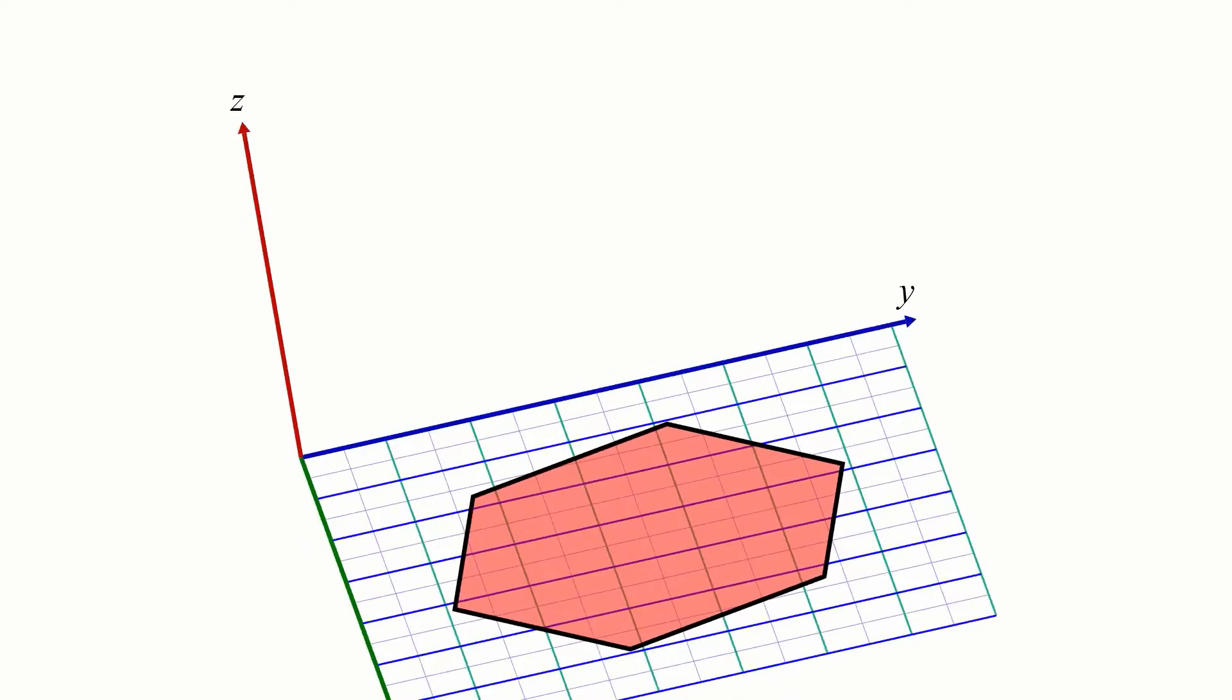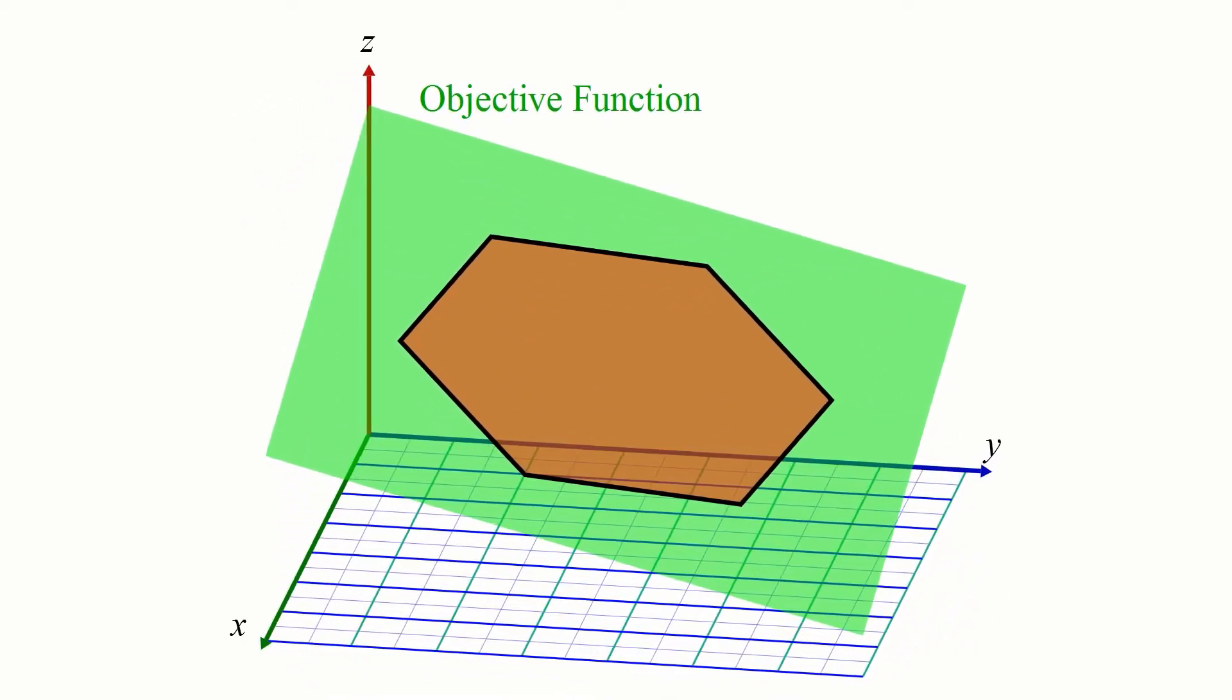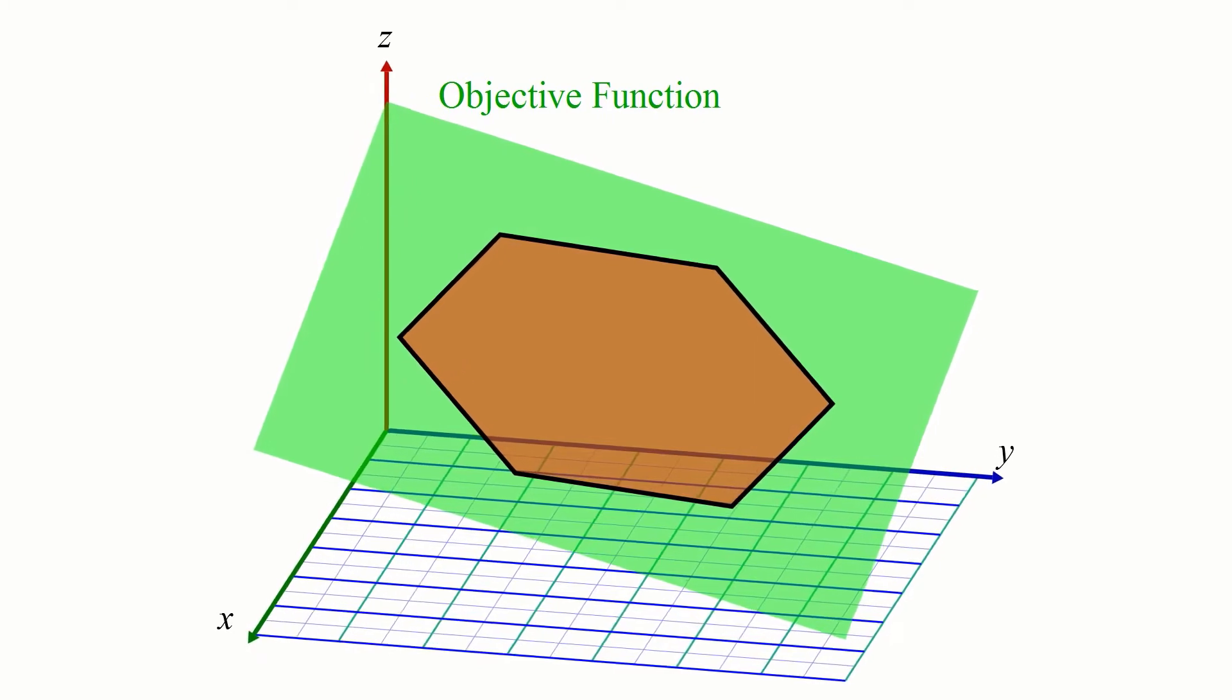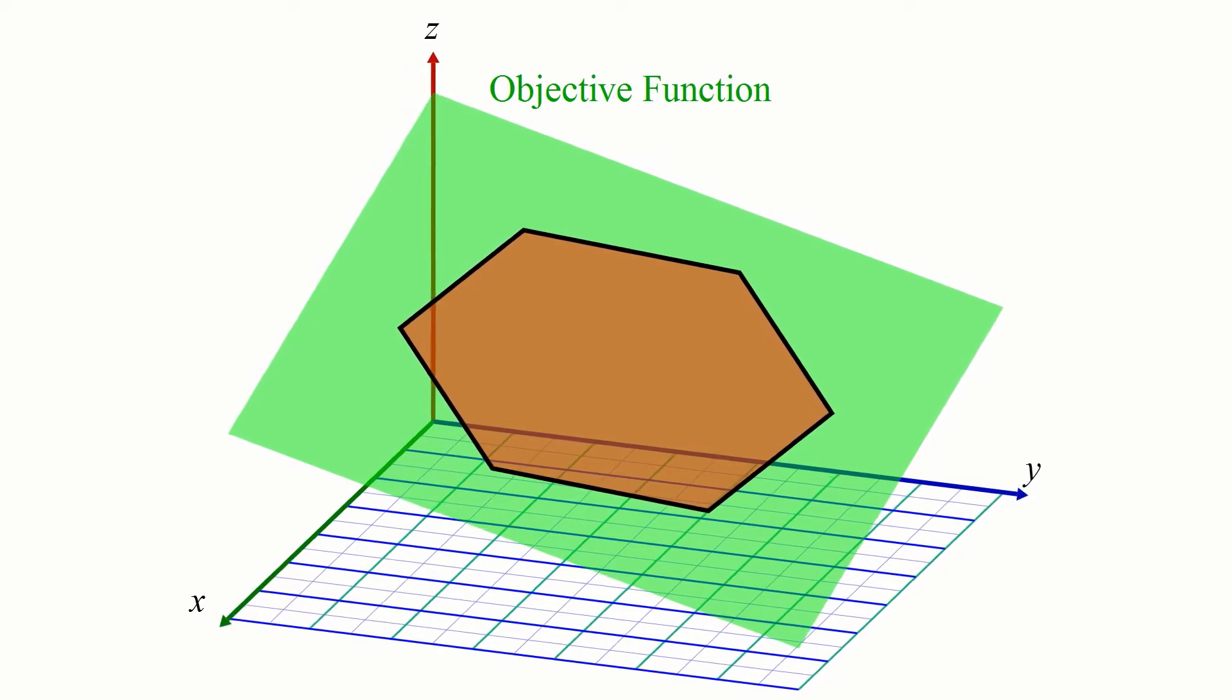In fact, for this example, let's pretend the objective function literally is elevation. Since the objective function is supposed to be linear, it means the elevation changes at a constant rate in any direction, and so it looks like a slanted plane.